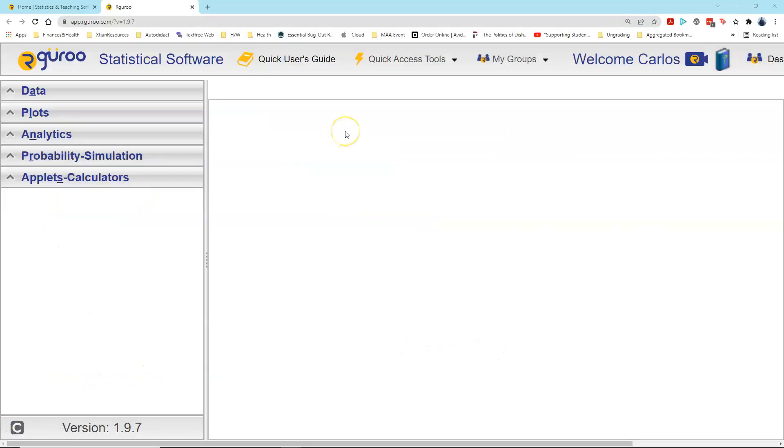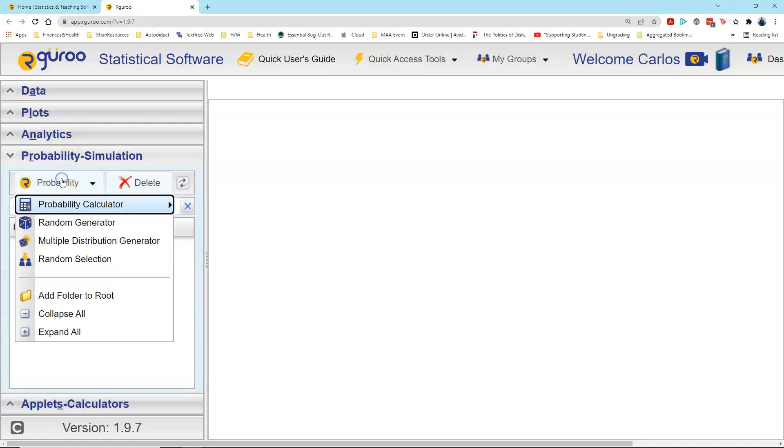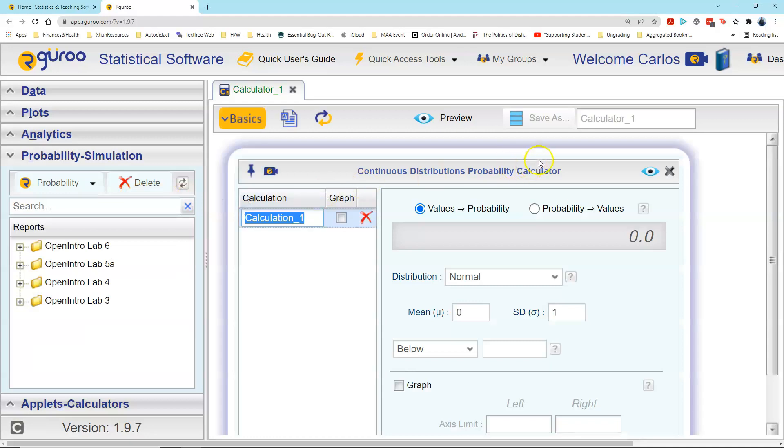Let's take a moment now to go to R guru and see how to find that P-value using these two Z-score values of negative 3.75 and positive 3.75. Within the R guru program, we now want to find the P-value corresponding to the Z values. We start by going to probability simulation, left-click on probability, go to probability calculator, left-click on continuous since we are dealing with a normal distribution curve.